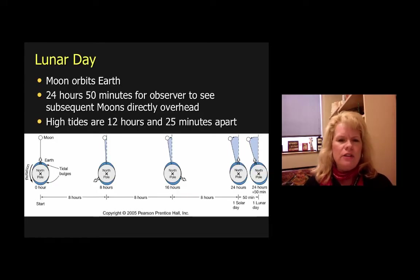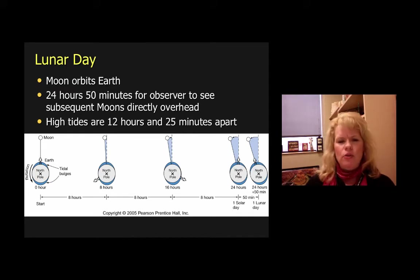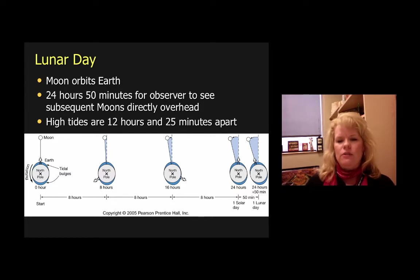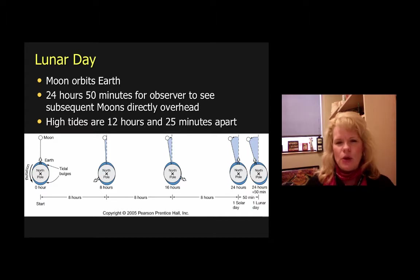How long does it take for a lunar day to occur? It takes 24 hours and 50 minutes for a person to see subsequent moons directly overhead, and high tides are 12 hours and 25 minutes apart. People figured this out by measuring the tides and determining there's a systematic rolling in and rolling back out of water. Imagine two or three thousand years ago — humans were trying to figure out what was happening with the water and what caused high and low tides.